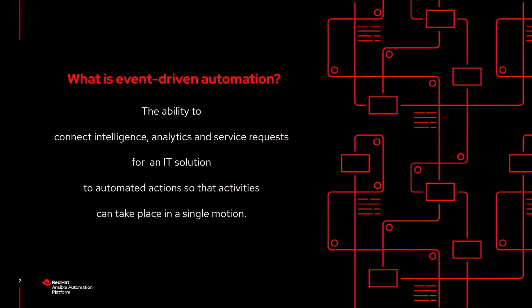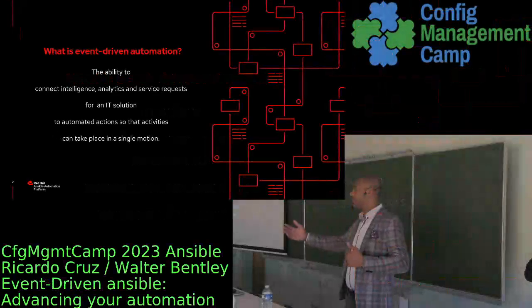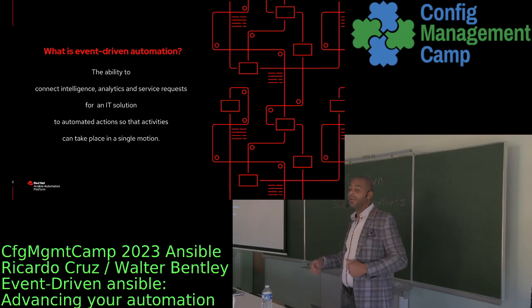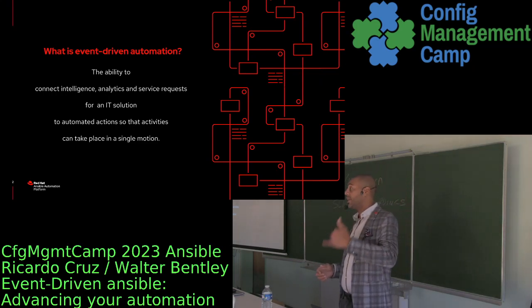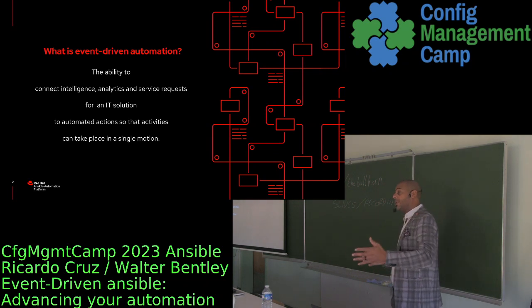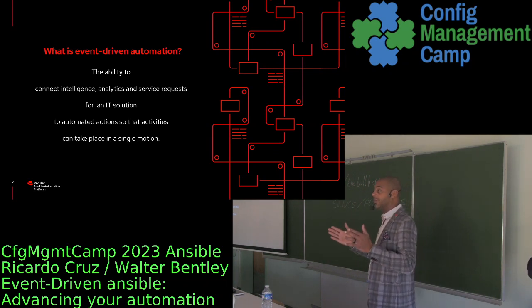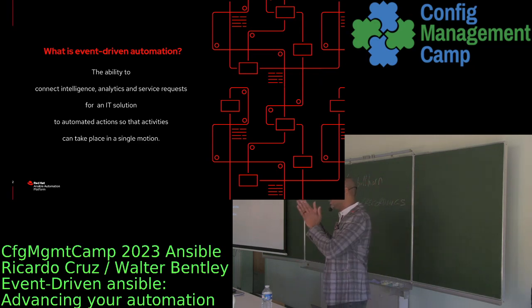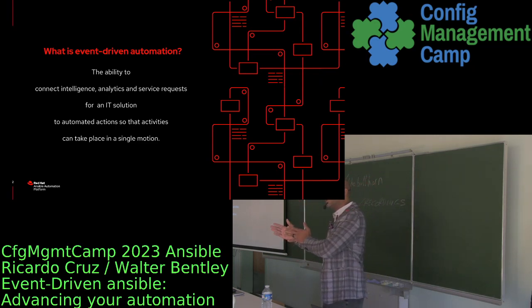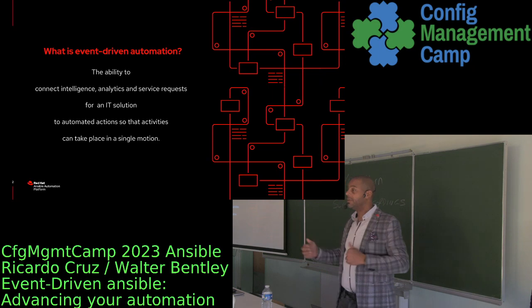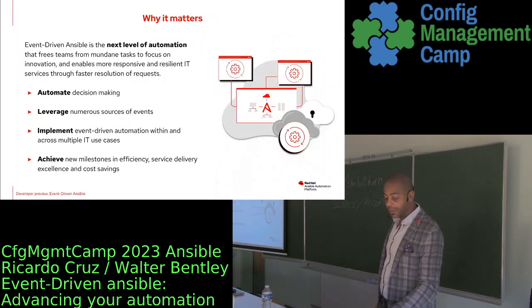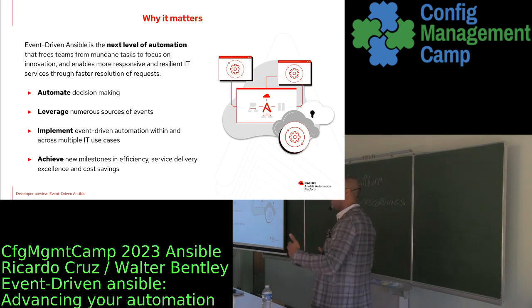When talking about event-driven automation, we all need the same definition. I used to use the term 'order remediation' back in 2015 when I thought this was very necessary — and now fast forward to today, we finally have it. It's just the idea of being able to take intelligence and analytics, take those service requests, and make an end-to-end IT solution. Something fails, you put rules in place to determine what to do next, it does that thing, and all is well.